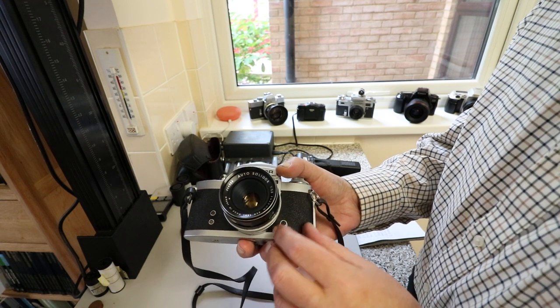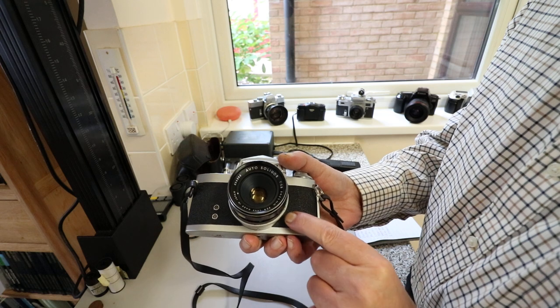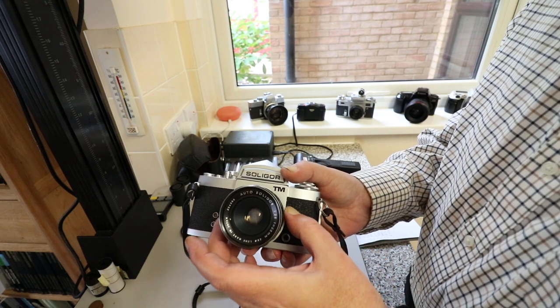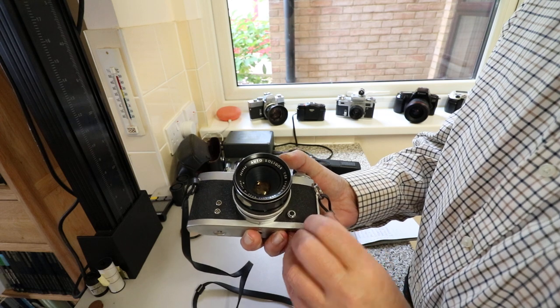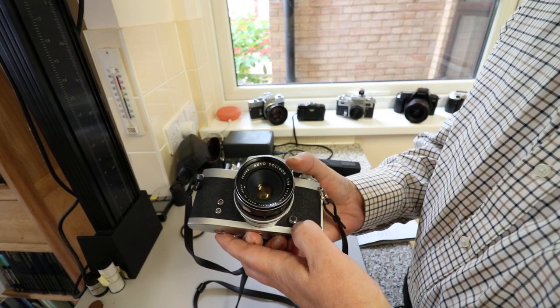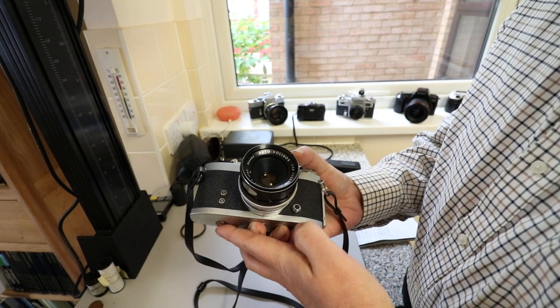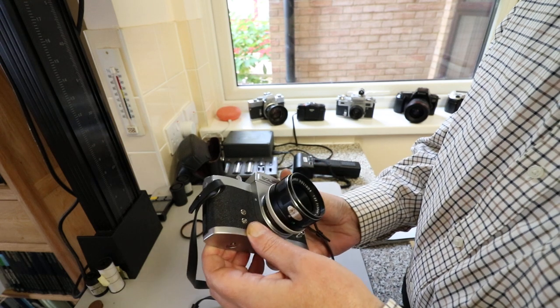On the front here, we've already seen the stop-down lever. This will become important later when we talk about metering. That stops the lens down. You push it and it should come back out. This is a very old camera.